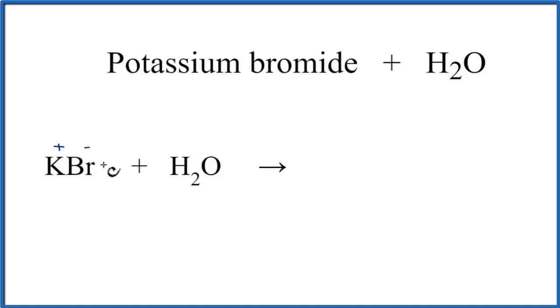We take solid potassium bromide, and then we put it in liquid water, and it dissolves. It dissociates into its ions, so we're left with K plus plus Br minus. The potassium cation and the bromide anion.